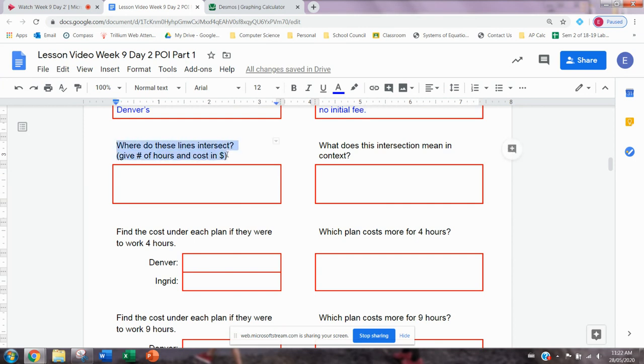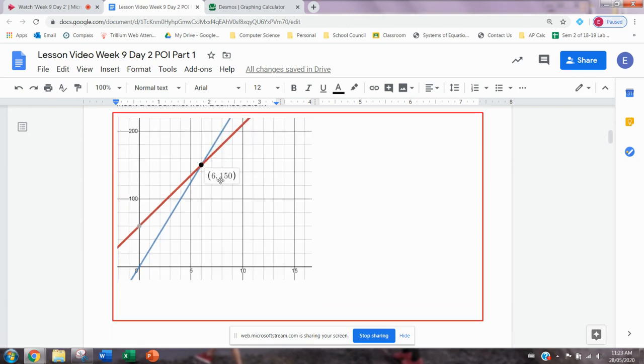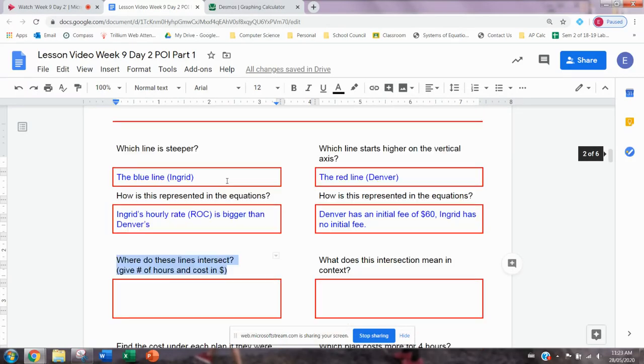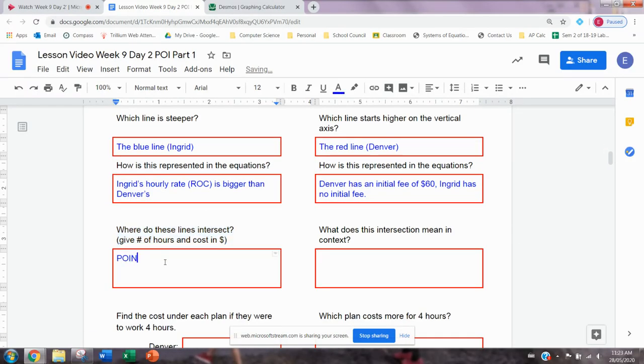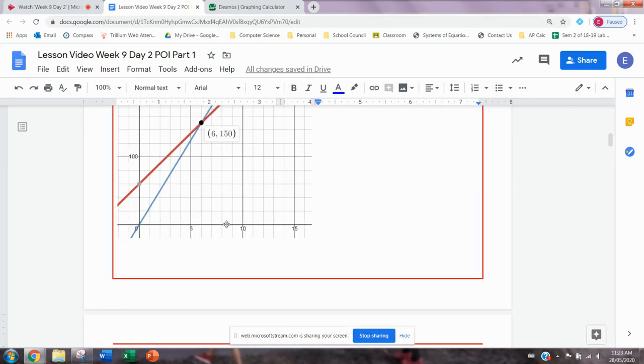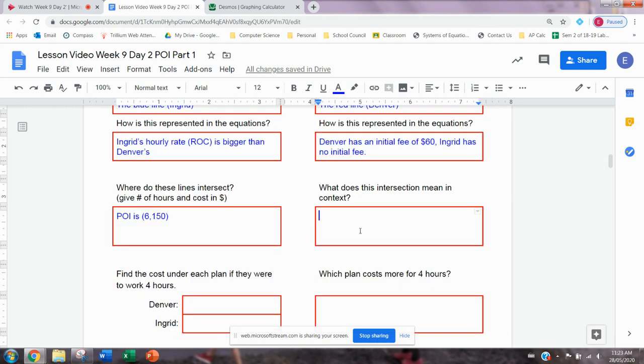Okay, the next question, where do these lines intersect given in cost and number of dollars? So what's the POI? The POI is six comma 150. So that's my point of intersection. And then we want to say what does that mean in context? So what does that mean in terms of the number of hours and the cost? So remember, my independent variable was the number of hours. So that's the six and the cost goes up and down. That's 150. So what this means is that for six hours, that's where they're the same, both charge $150.